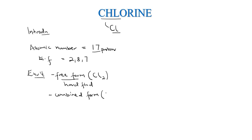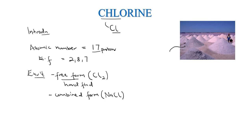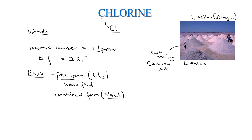In combined form we can find chlorine in the form of salts — for example, sodium chloride. As you can see here, we have an image of salt mining. In most cases they are mining sodium chloride, which is also known as common salt. This image is from Lake Retba in Senegal. There are many lakes that can give you sodium chloride or table salt — we also have Lake Katwe in Uganda. So chlorine mainly occurs in combined form, attached to another element such as sodium, potassium chloride, or calcium chloride.